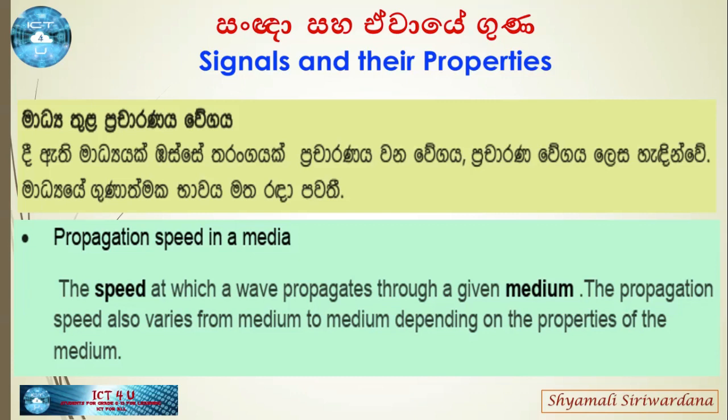Propagation speed is the speed at which a wave propagates through a given medium. The propagation speed also varies from medium to medium, depending on the properties of the medium.